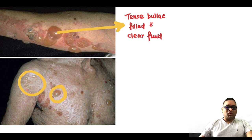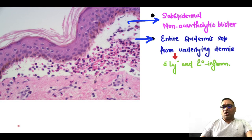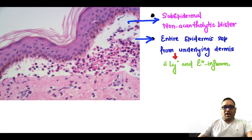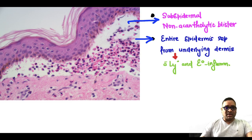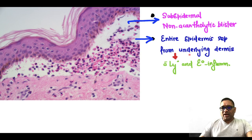These are all tense bulla with clear fluid. On histopathological examination, you will find the epidermis, and below the epidermis there is a clear space containing some inflammatory cells. This clear space is the sub-epidermal blister — a sub-epidermal non-acantholytic blister, which is very important. The entire epidermis has been separated from the dermis, and the space contains lymphocytic and eosinophilic inflammation.